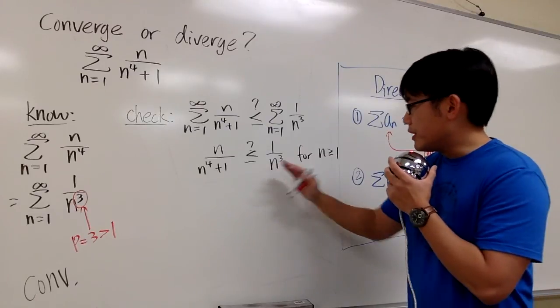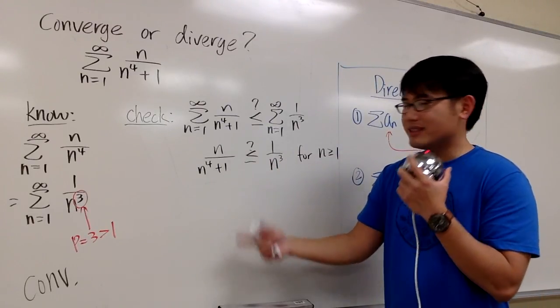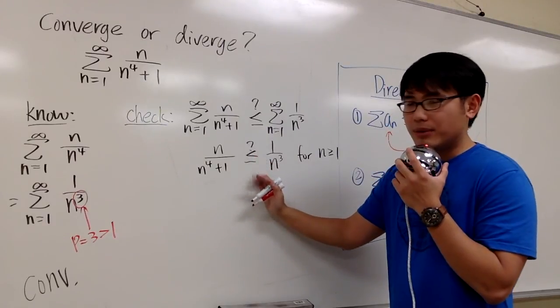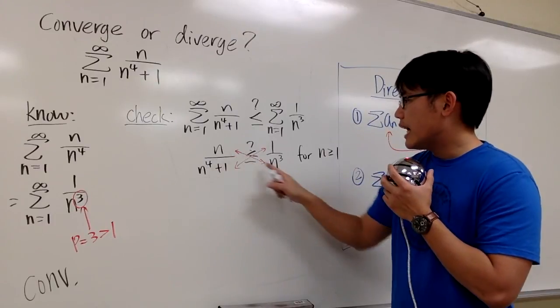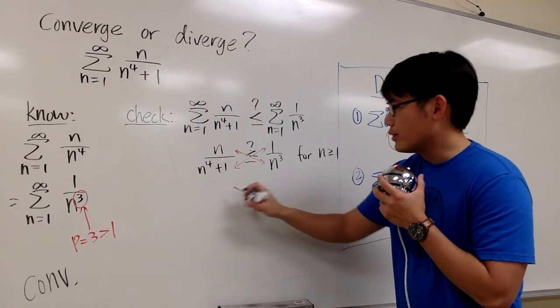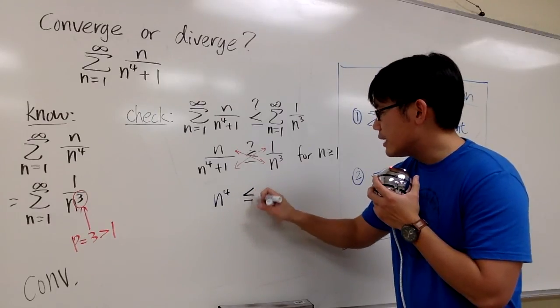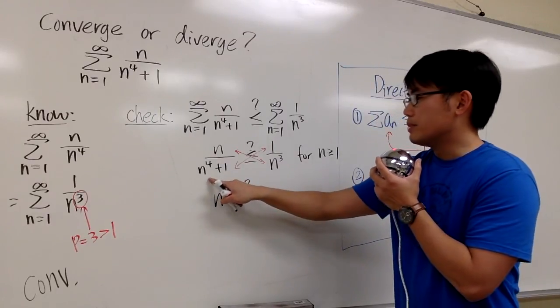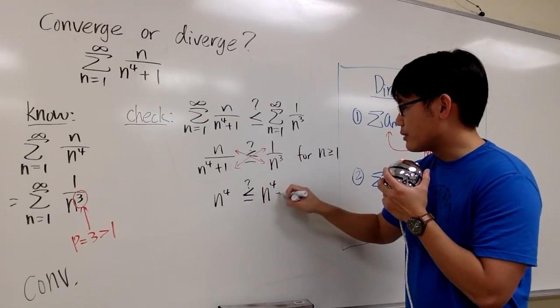Now because I said that, we get to cross-multiply. And especially n is positive anyways, so we don't need to switch the inequality symbol. Let's go ahead and do that without any worry. n times n to the third power is going to be n to the fourth power. Is this less than or equal to n to the fourth power plus 1 times 1, which is n to the fourth power plus 1?